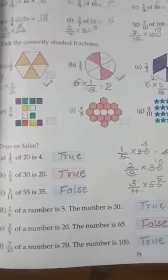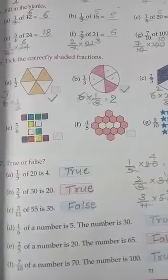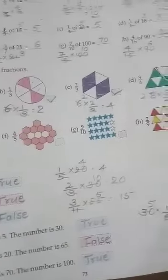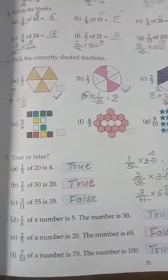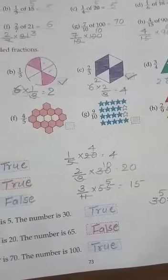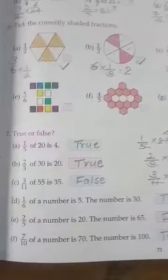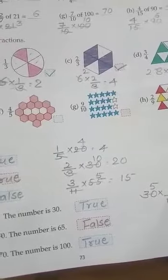1 by 5 of 20 is 4. 1 by 4 of 20. 2 by 3 of 30 is 20. 3 by 11 of 55 is 35, so we will see the answer is 15.